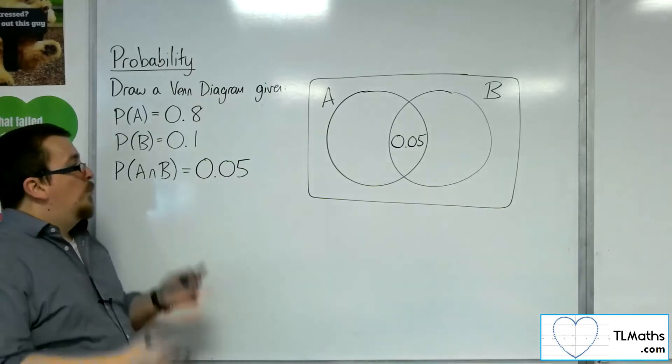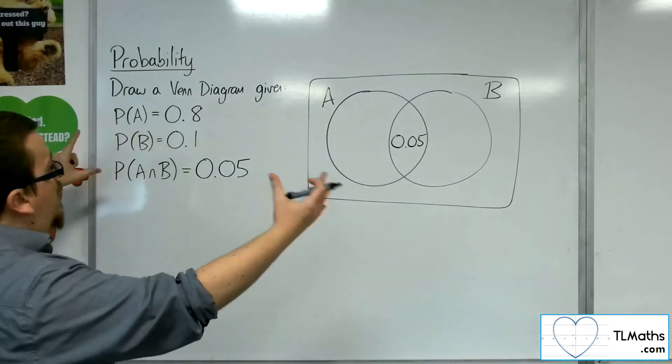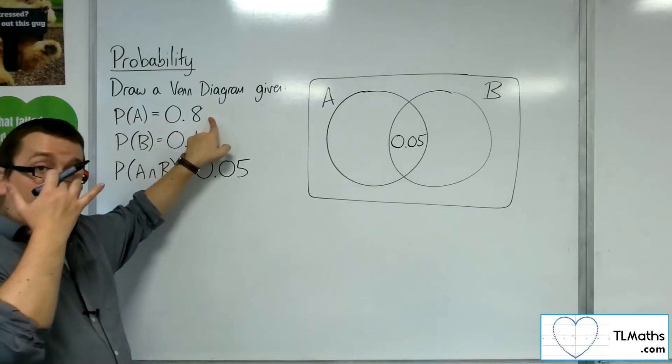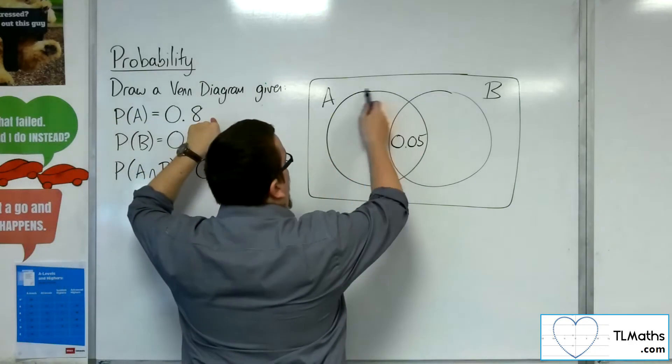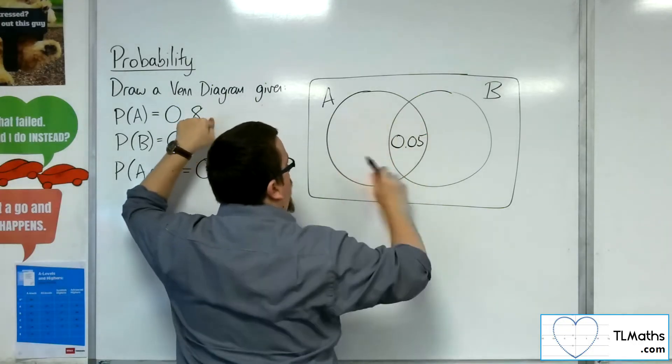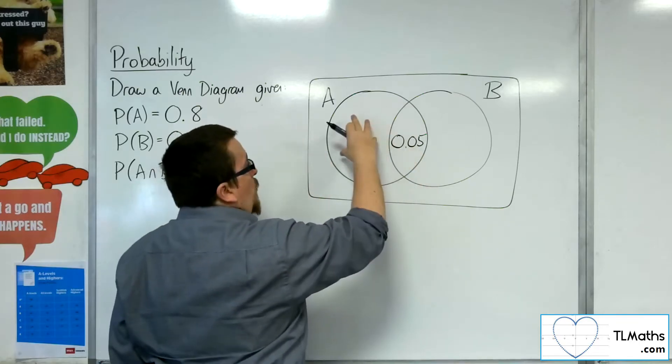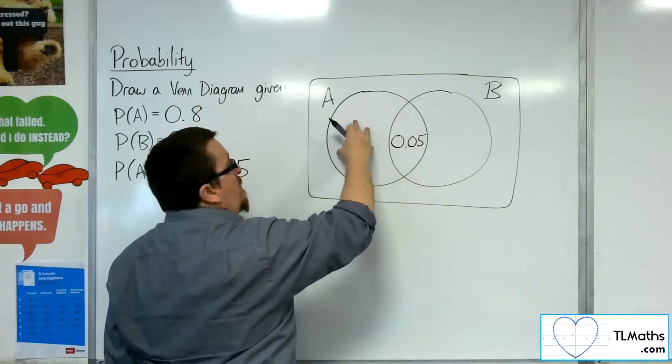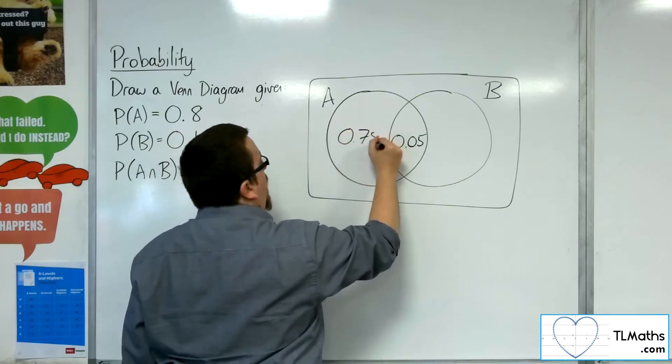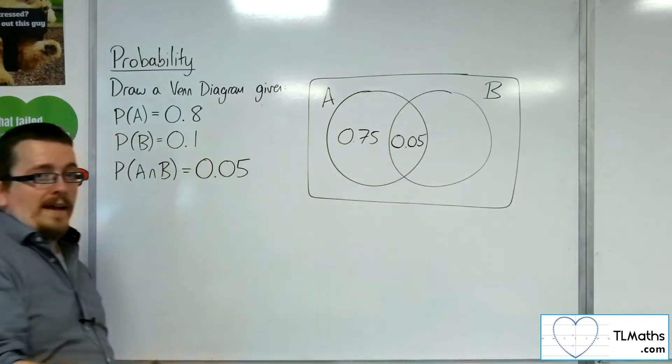Now with that done, you can then look at the two other probabilities working your way out. So let's have a look at A first. The probability of A is 0.8, so that means that the whole of the circle of A must be 0.8. We've already got 0.05 as the intersection, so whatever is here must be what's left of the 0.8. So that must be 0.75, in order for those two probabilities to add up to 0.8.